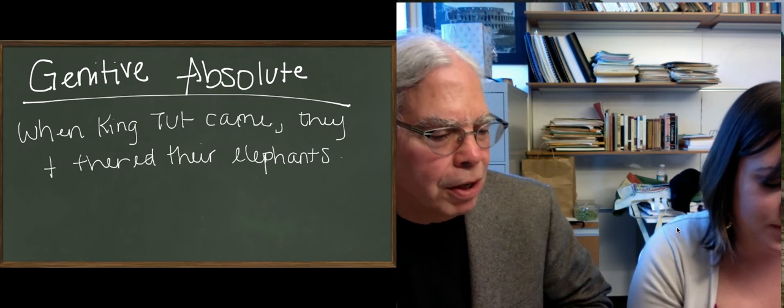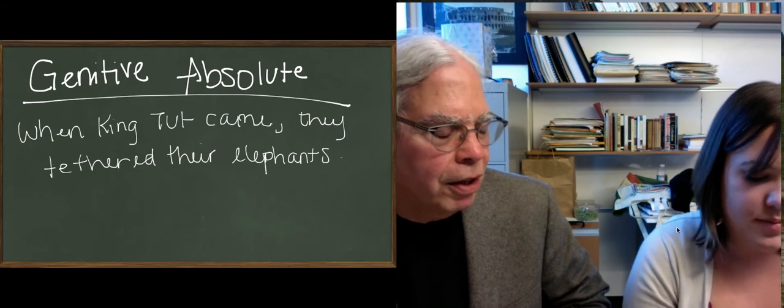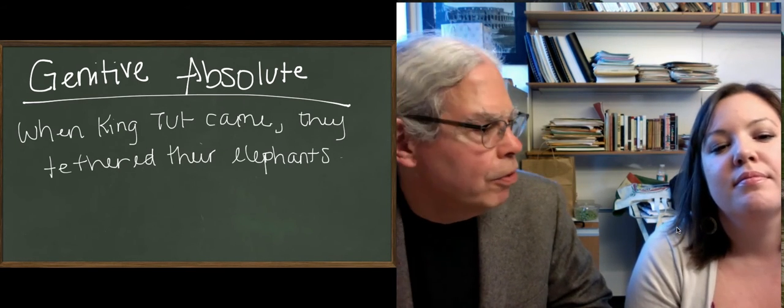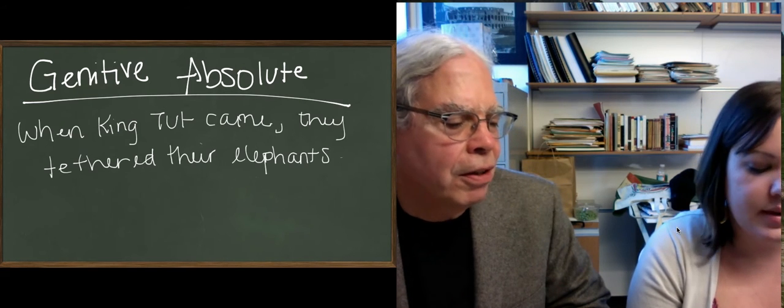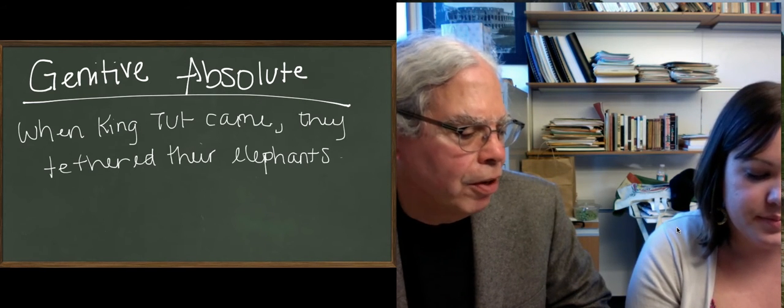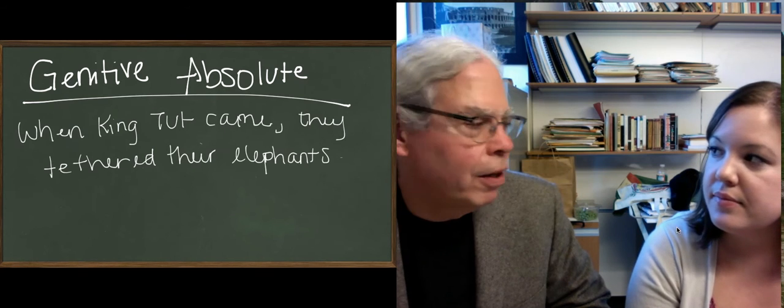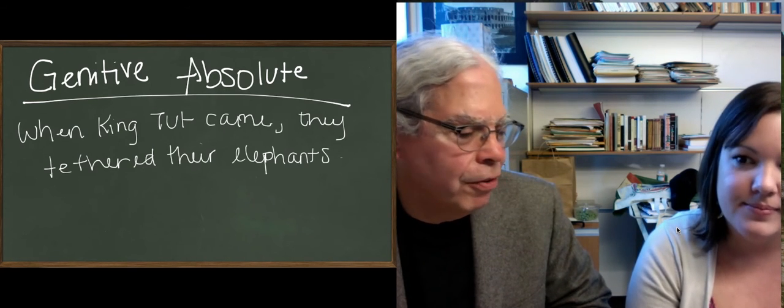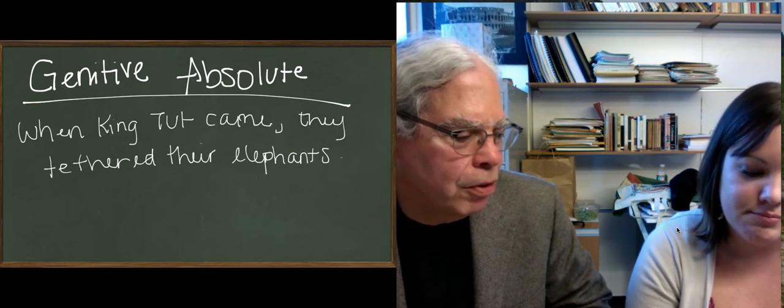What do you do in Greek if you have something like that? We just learned one way - you can have a word for 'when,' and you play King Tut, and it's a past definite temporal clause. But Greek loves participles and loves to do subordinate clauses with participles.